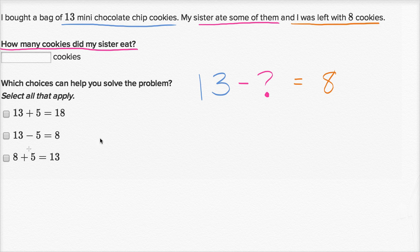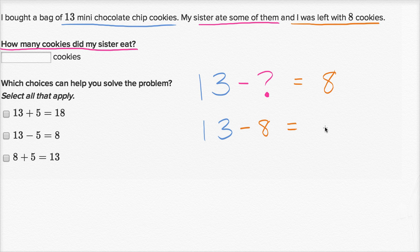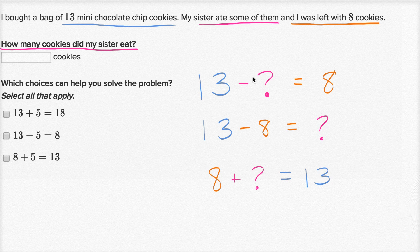Or you could view this as: if you want to solve for the something, some of you might just say, I know 13 minus five is equal to eight, so the question mark is equal to five. Or you could say 13 minus eight equals the question mark. Or you could say: if I was left with eight cookies and my sister ate some, then eight plus the ones my sister ate must equal how many cookies I originally had. Any way you do it, the question mark is equal to five — sister ate five cookies.